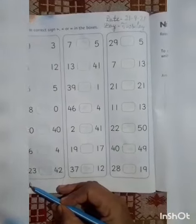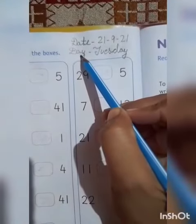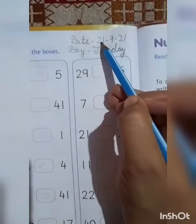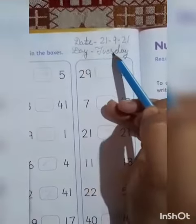Now open your books page number 58. First of all you have to write down date and day on the top. Today is 21st of September 2021 and the day is Tuesday.